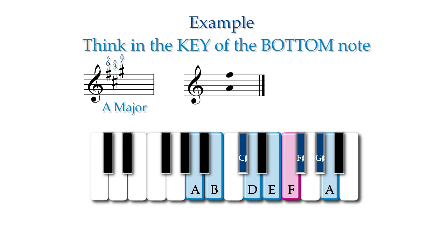Since the note F does not exist in the key of A major, then A up to F is not a major sixth. A up to F sharp is a major sixth. Since A up to F is 1 half step smaller than A up to F sharp, the sixth is not major, it is minor.